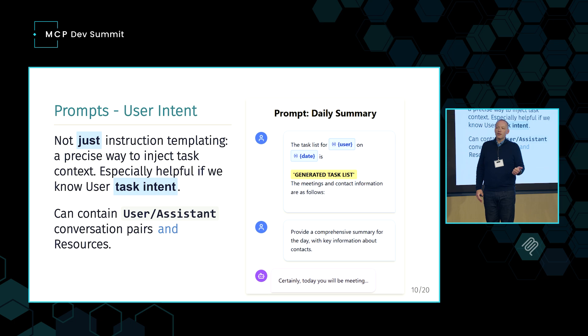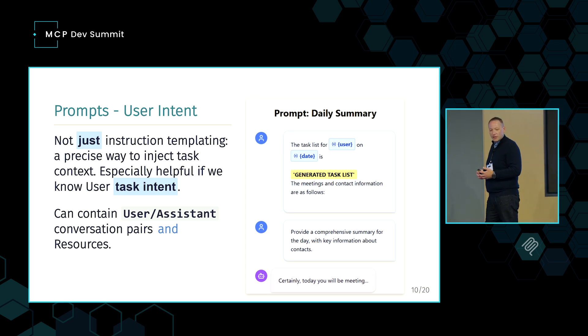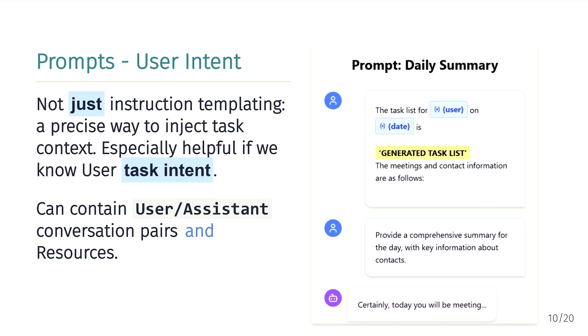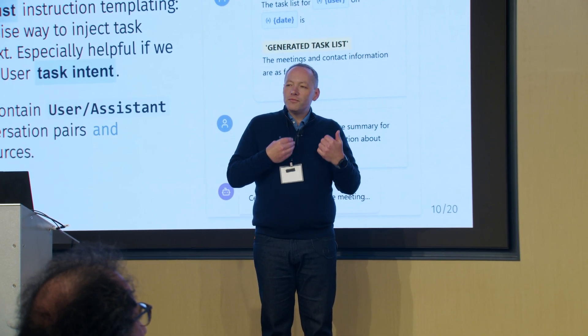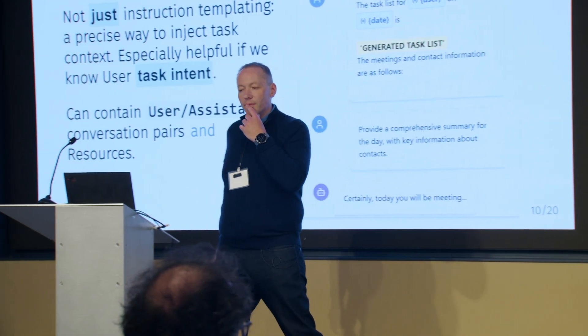Prompts aren't just a way to do instruction templating — they're a very precise way to inject task context. If we care about the performance of our completions and applications, it's really quite useful to know up front what the user's task intent is so we can populate the prompt with the right pieces of context. For example, producing a daily task list might involve three tool calls — show task list, share calendar, show calendar context — but those chained tool calls significantly reduce reliability and consume a lot of context space. You can actually concatenate that context into a single prompt and get far better performance.